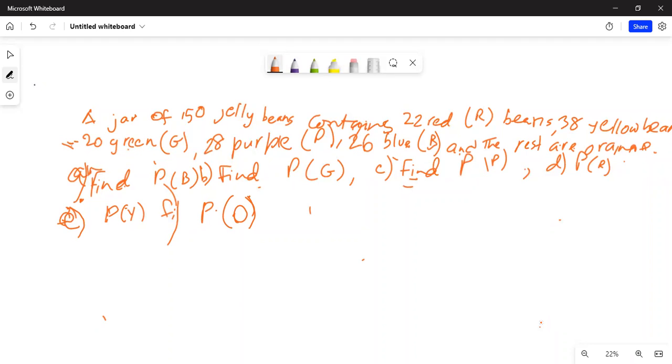Find probability: part A, probability of blue; part B, probability of green; part C, probability of purple; part D, probability of red; part E, probability of yellow; and part F, probability of orange. Now let's do the solution.